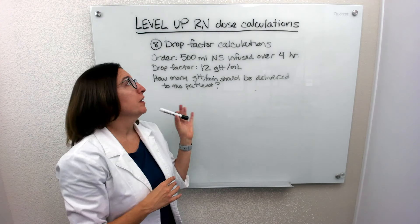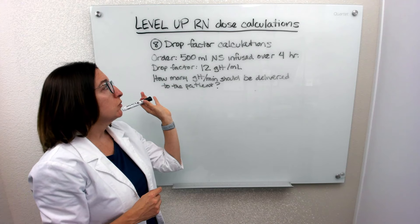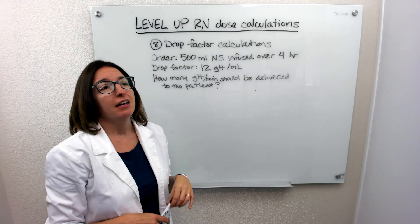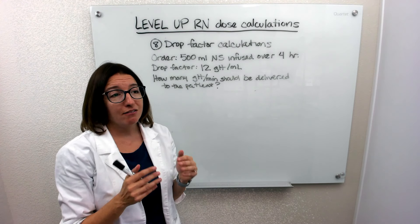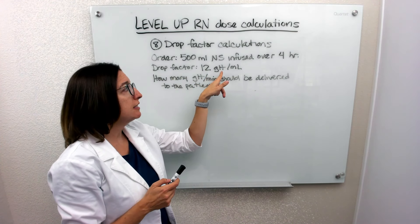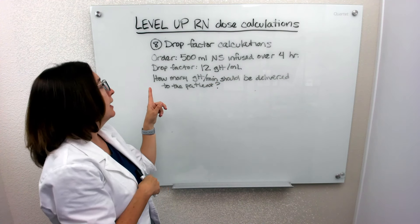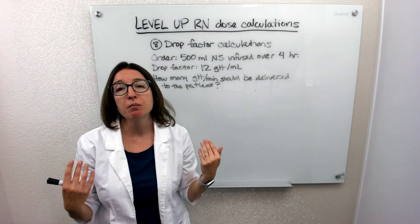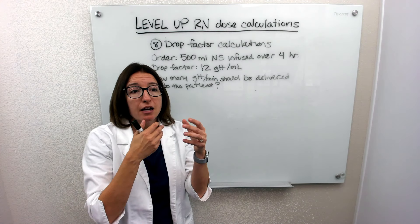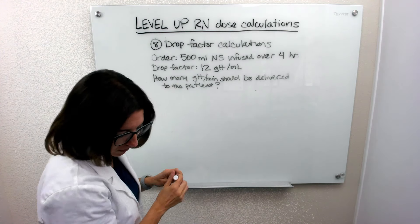All right, number eight deals with drop factor calculations. So in this problem, we have an order to infuse 500 milliliters of normal saline over a four hour period of time. And in this scenario, we don't have an Alaris IV pump. What we have is a drop factor of 12 GTT, that means drops, per milliliter as far as the tubing set up. And we want to know how many drops per minute should be delivered to the patient. So again, this is a scenario where we don't have an IV pump and we have to manually adjust the IV bag and the tubing to deliver a certain drop factor. So let's work through this problem.